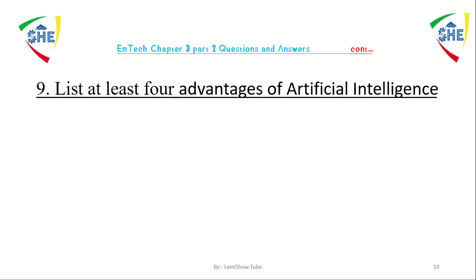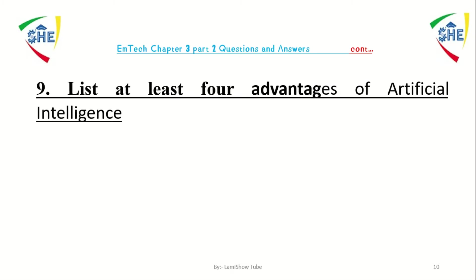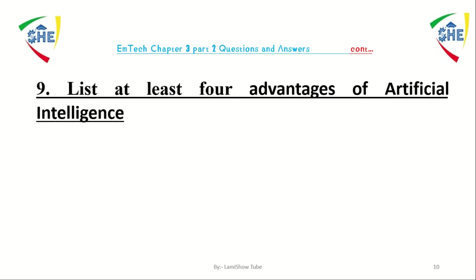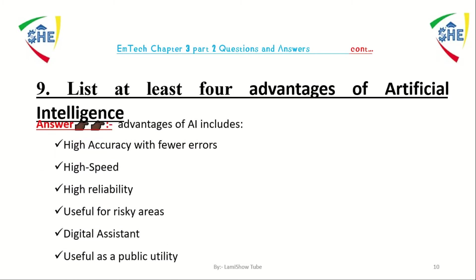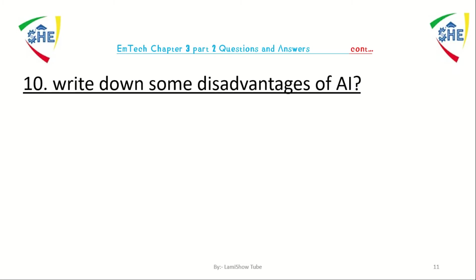Question number nine: list at least four advantages of artificial intelligence. Some advantages of artificial intelligence are: high accuracy with few errors, high speed, high reliability, useful for risky areas, digital assistance, and useful as a public utility.